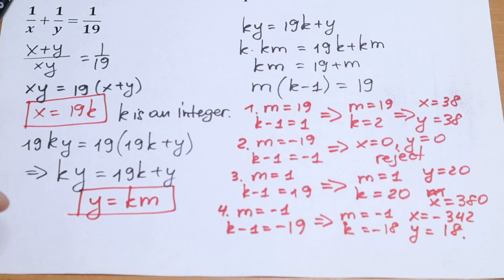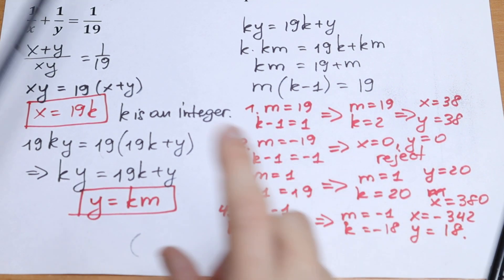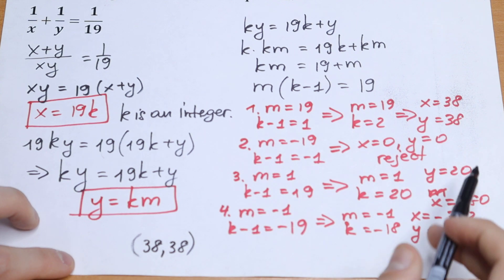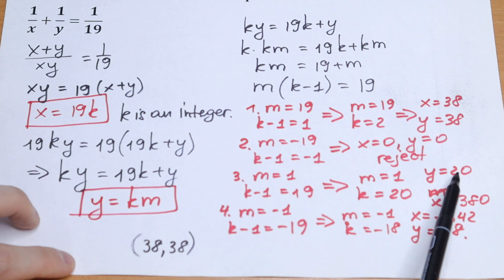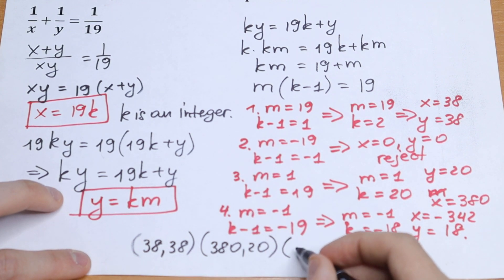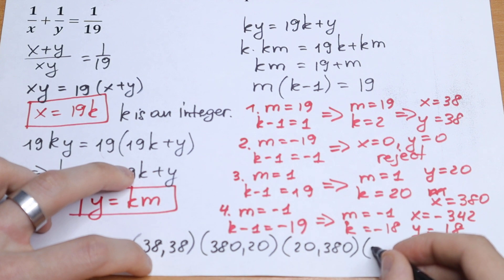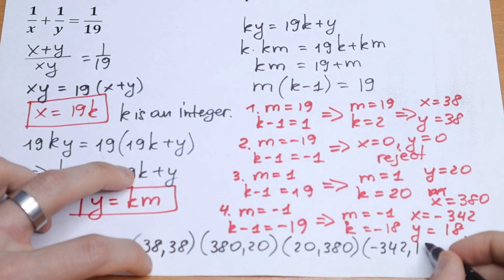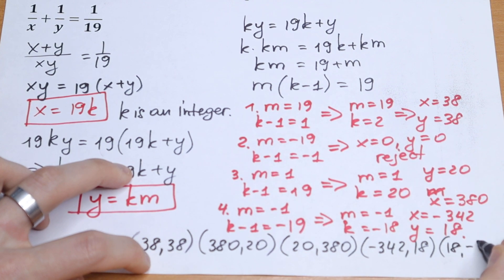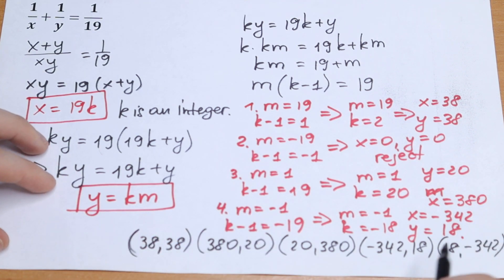Let me write all the solutions. The first pair is (38, 38). The next is (380, 20). Then in reverse, (20, 380). Then (minus 342, 18). And the last one in reverse, (18, minus 342). These five pairs are our complete answer.